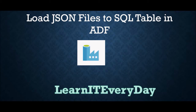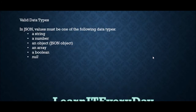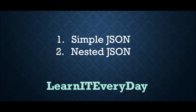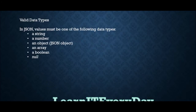JSON is a very widely accepted file format because of its simplicity. It's a semi-structured data format that works more like key-value pairs. Before we jump into Data Factory, we will cover the very basics of JSON — two kinds: simple JSON and nested JSON. Simple JSON has only attributes, while nested JSON can have arrays or another JSON embedded within it.